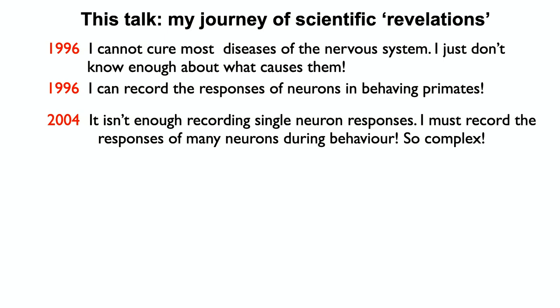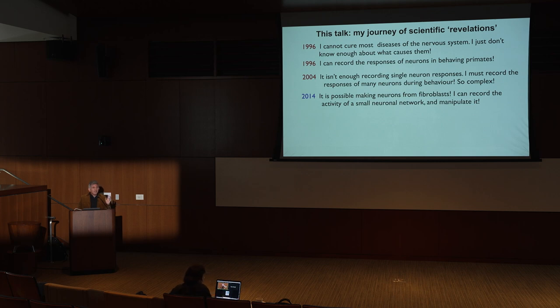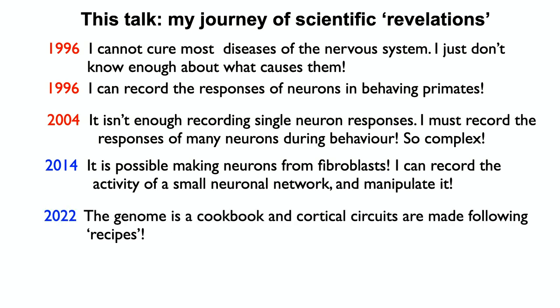But in 2004, after spending about eight years on that and starting my faculty job, I realized that recording single-unit responses isn't enough. I must record the responses of many neurons at the same time, because the population doctrine had emerged and it was clear that was necessary. Then in 2014 I had another revelation: it's possible to make neurons from fibroblasts. Yamanaka had discovered iPSCs, the way to turn adult cells into stem cells, and around 2013 Sasai produced some of the first organoids. I realized I could record the activity of a small, controlled network of neurons and actually make sense of it.